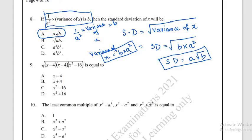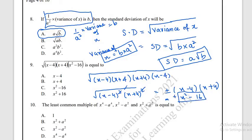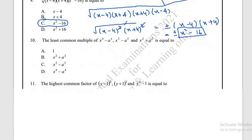Question number 9: simplify (x − 4)(x + 4) × √(x² − 16). We factorize the expression under the square root: x² − 16 = (x + 4)(x − 4). After factorizing and simplifying, terms cancel, giving us ±(x² − 16). So the correct answer for question 9 is option C.